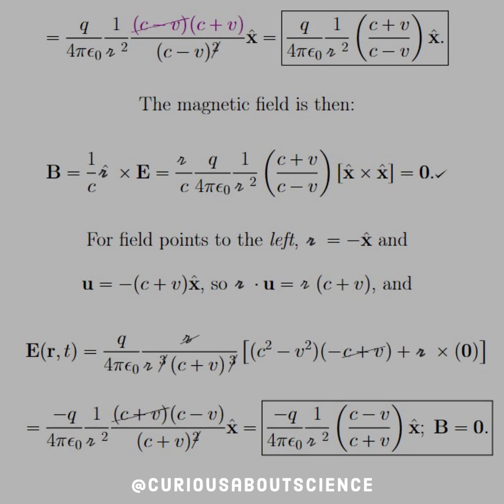and we have a negative on the Q. So we get negative Q over 4πε₀, 1 over script R squared, C minus V over C plus V, x-hat, and B equals 0. So this one really wasn't too bad. You just have to be careful how to set up that script R, and you're good to go.